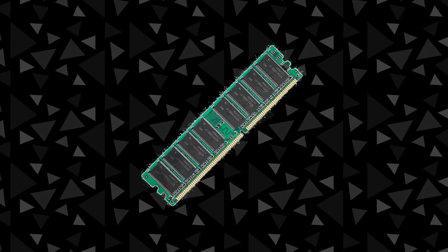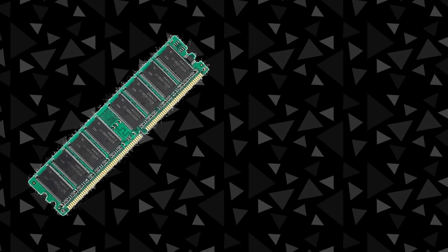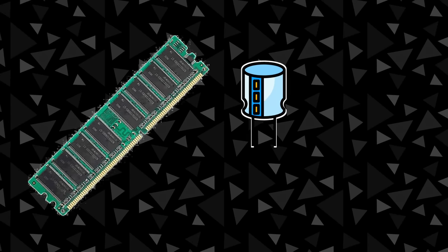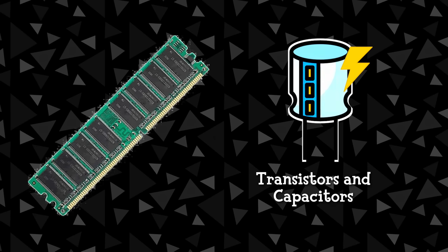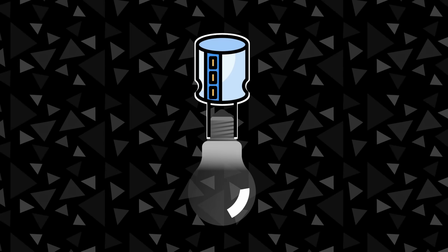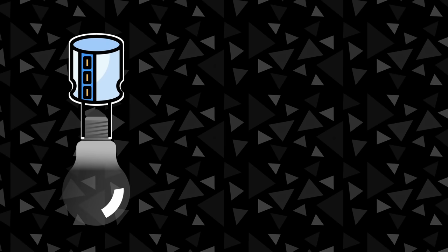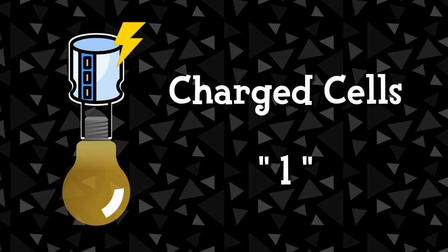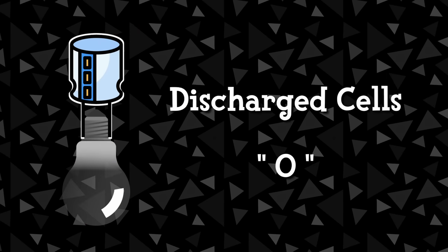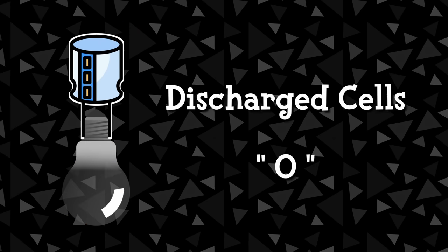In terms of computer memory storage, engineers store data by including millions of tiny transistors and capacitors in a special chip that can either be charged or discharged with electricity. Think of these capacitors as special cells connected to a lightbulb — when charged, these cells light up and represent a 1, and when not charged, they are dim and represent a 0.